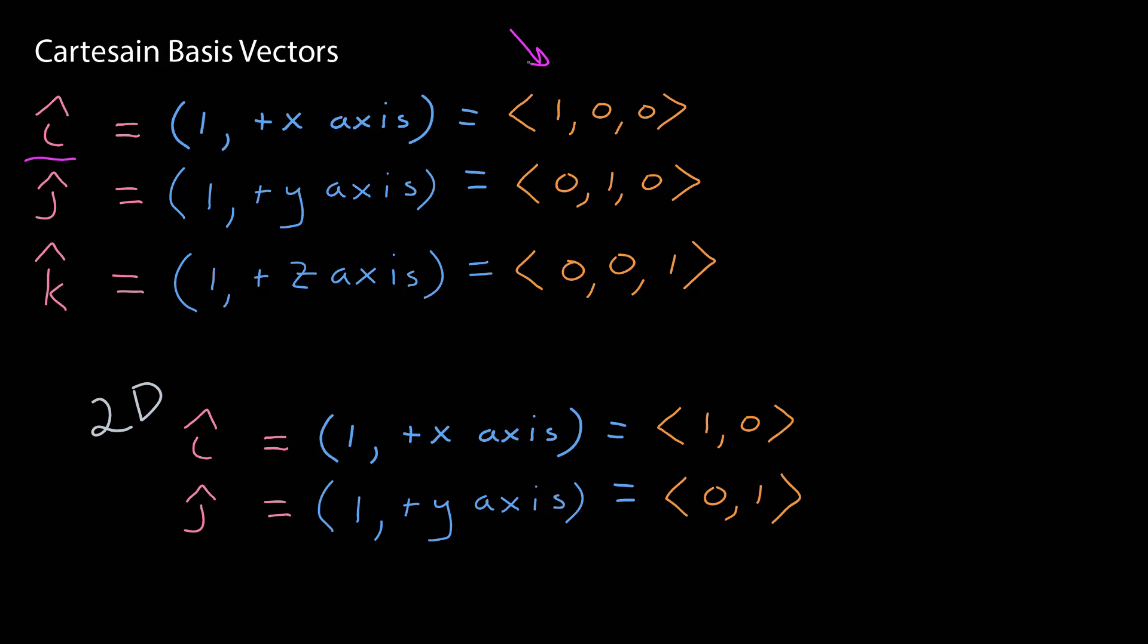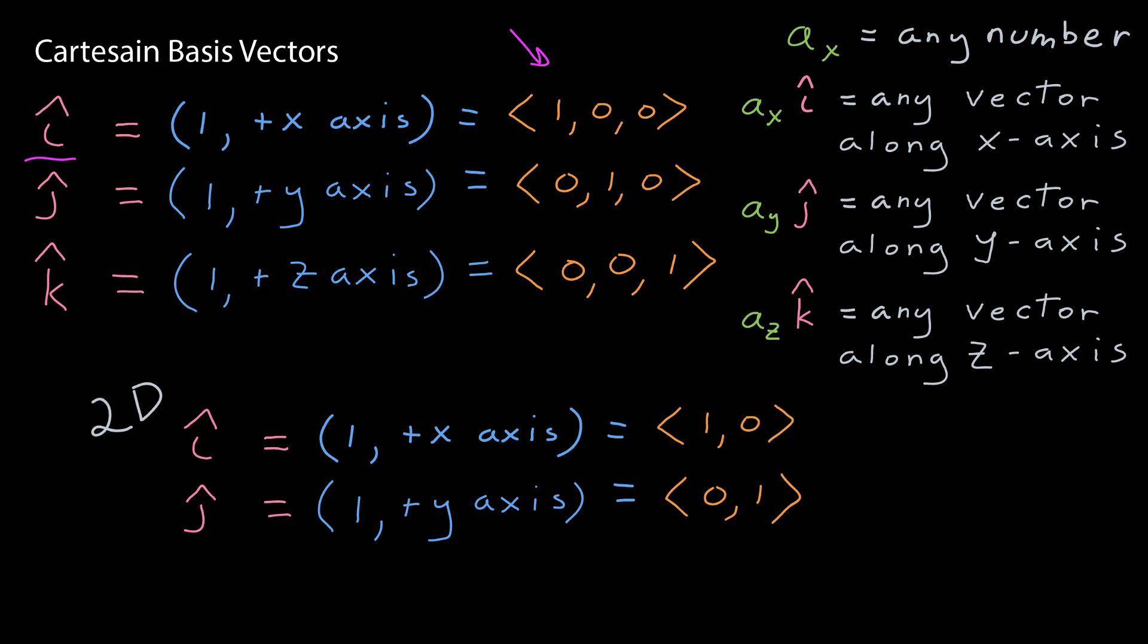If I were just working in two dimensions, I would have i hat and j hat, unit vectors that point along the positive x and y-axis, respectively. Why are these important? Well, if I let a sub x be any number, it's a scalar, then that scalar times i hat will give me any vector along the x-axis. And similarly, if I take another number, a sub y, multiply it by j hat, I can get any vector along the y-axis. And a sub z k hat gives me any vector along the z-axis. And that means a linear combination of those three vectors will give me any possible vector. And that is the basis of the component form notation for vectors, which is what we use extensively for the rest of the course.